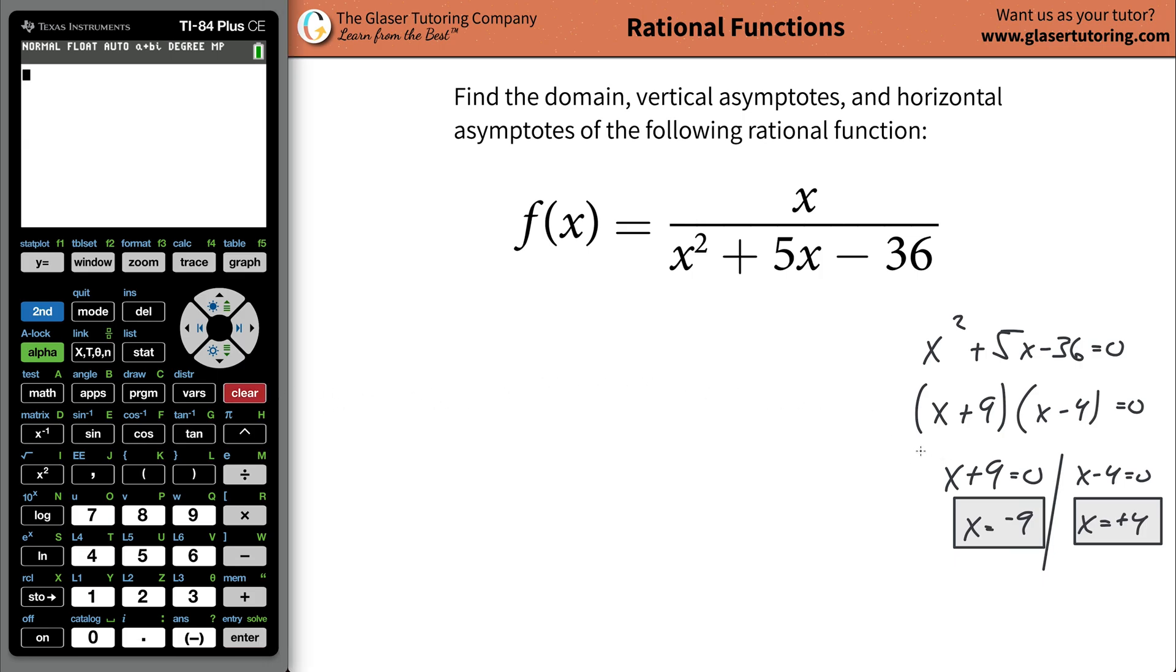So these are now the values of x that the function cannot have. It gives a wacky result. So I can say this, that the domain is going to be all real numbers. All real numbers except for negative nine and positive four. That would be the domain. You could write it in interval notation, whatever notation you need. But that's the idea. That takes care of the domain.